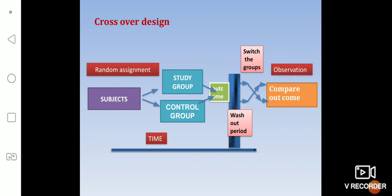The second design is the crossover design. We select subjects and allocate them into study group and control group, follow them for a certain period, then verify the outcome. After that, the control group becomes the study group and the study group becomes the control group — the groups are switched. We give a washout period for the effect of the drug to clear, then after that period both groups are converted into their opposite roles and we compare the outcome.